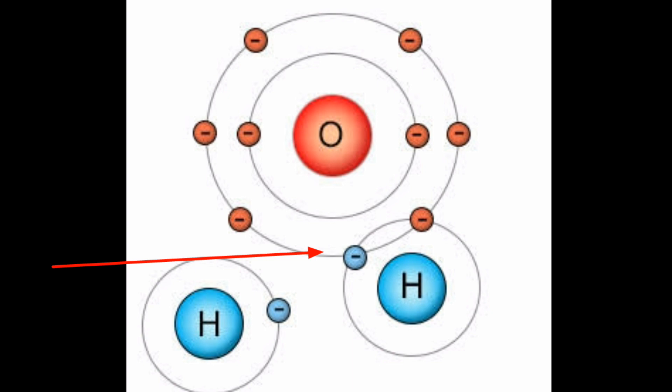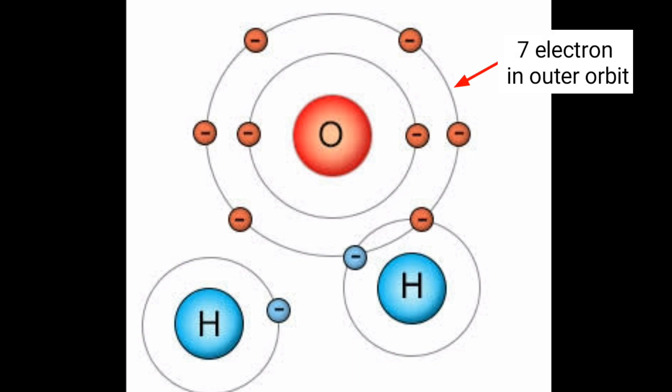Now in this picture, you can see hydrogen has its duplex structure and is stable, but not the oxygen. Oxygen now has seven electrons and to gain the octet structure, they have to gain one more electron.